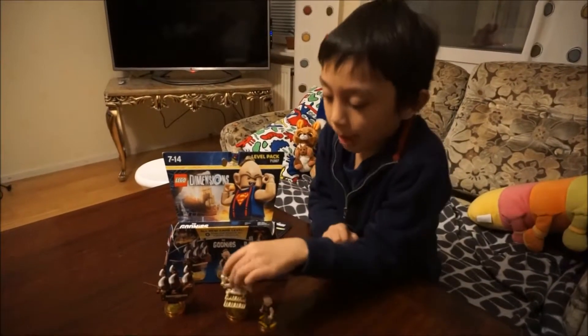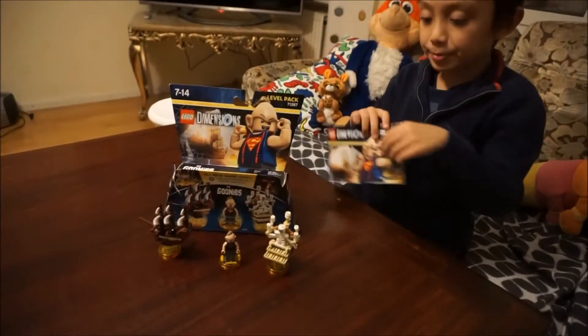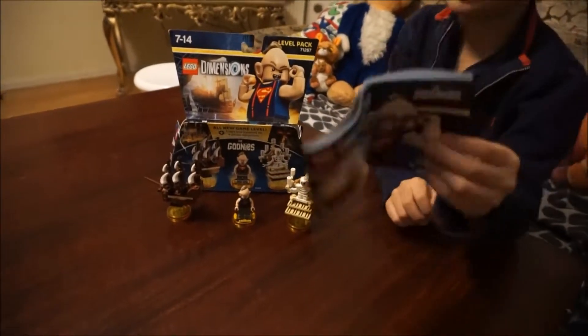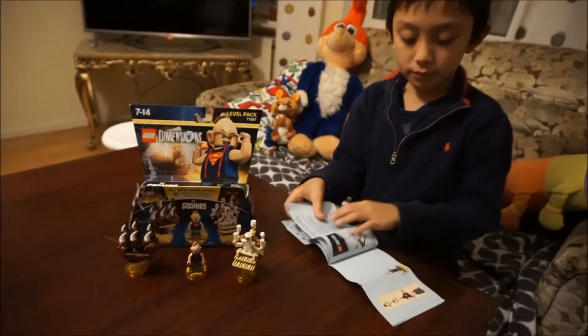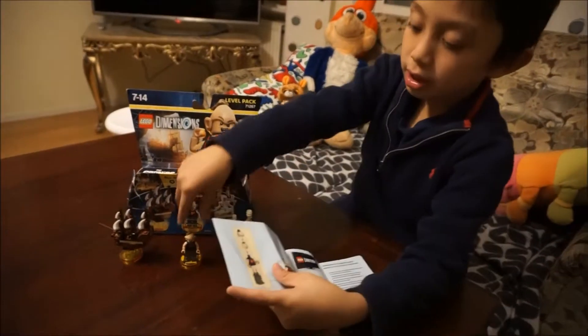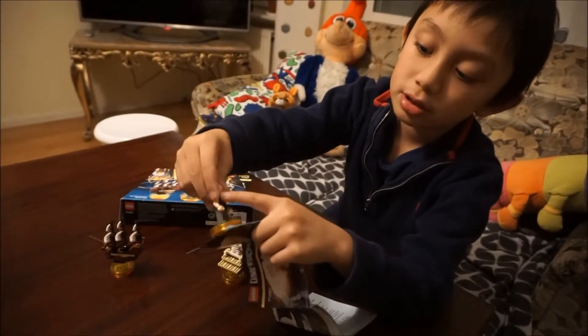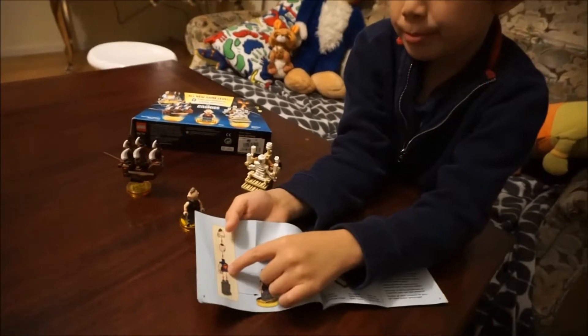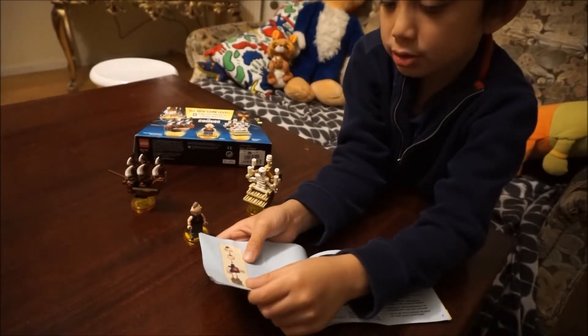So I'm going to tell how to build these, except One-Eyed Willie's Pirate Ship. So this is Sloth, and this is just going to talk about how to build Sloth. You take a part of this, which is from that, put it onto this head, connect it to the body, and then do it to the trousers, grey trousers.